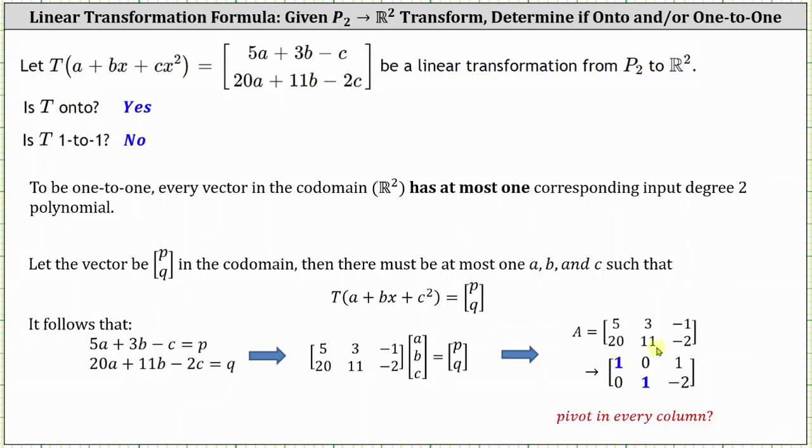This should also make sense because if we don't have a pivot in column 3, then C is going to be a free variable indicating there will be an infinite number of solutions. And to be 1 to 1, every vector in the codomain can have at most 1, meaning 0 or 1 corresponding input degree 2 polynomials, meaning the system can have either 0 or 1 solution.